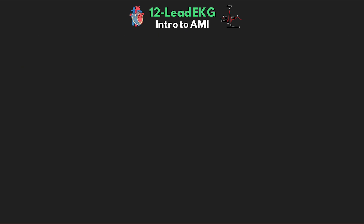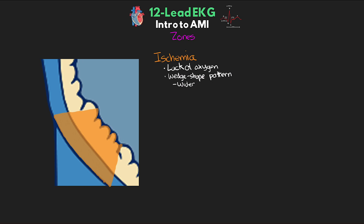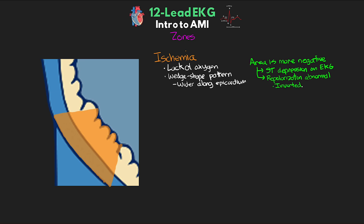Now let's talk about the zones of presentation of ischemia, injury, and infarction. First is ischemia. This lack of oxygen will impact an area of the myocardium in a wedge-shaped pattern with a wider section along the epicardium. This area of ischemia ends up being more negative than the normal myocardial tissue, which leads to ST depression on EKG. Along with that, we also have repolarization taking place along an abnormal pathway, giving us inverted T waves as well.